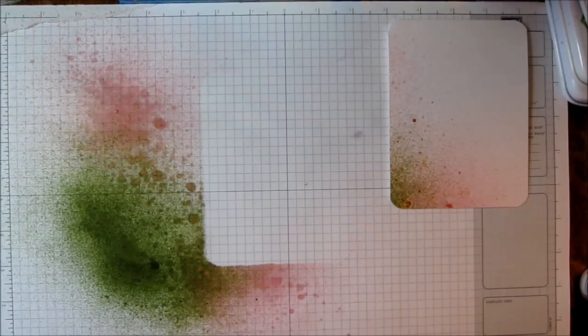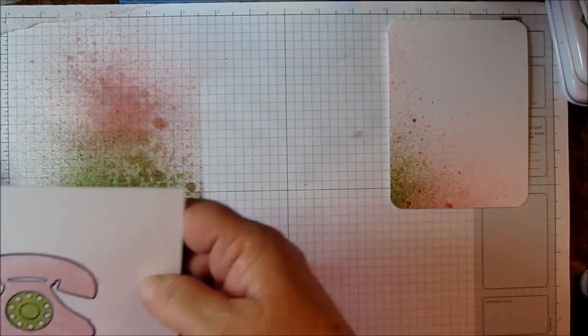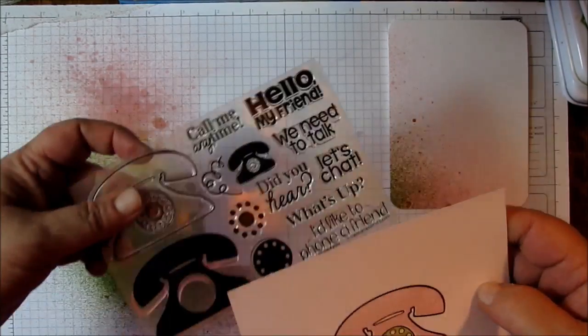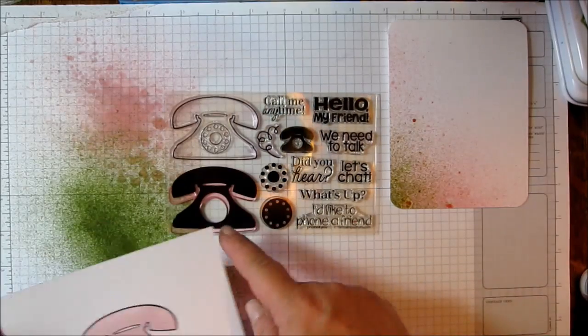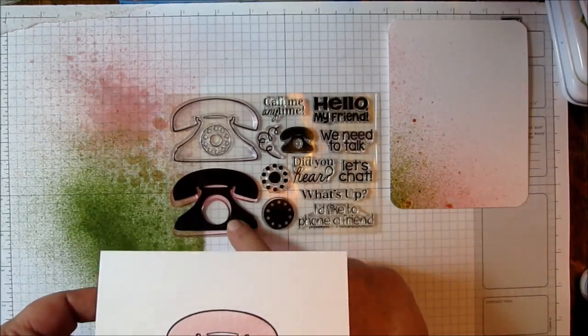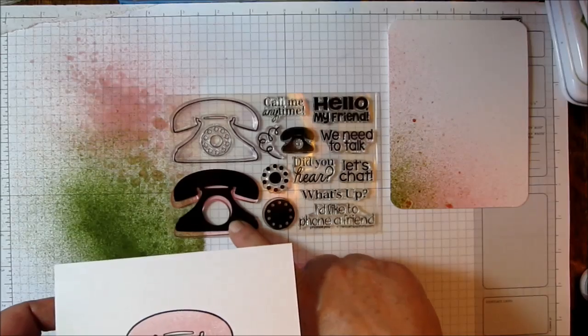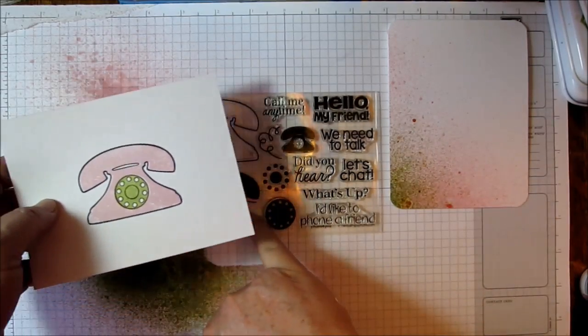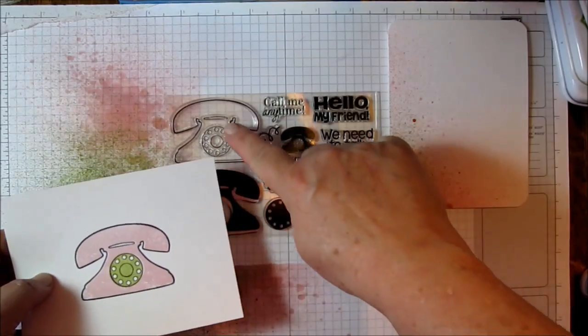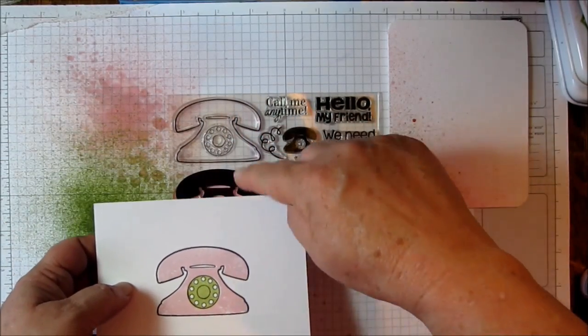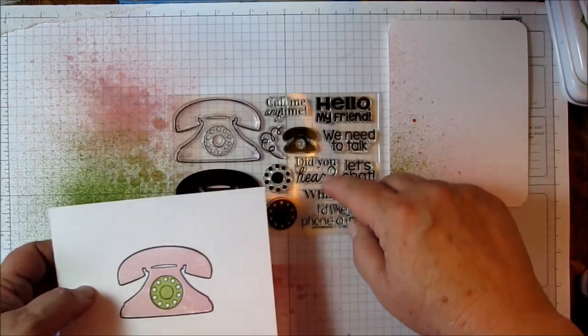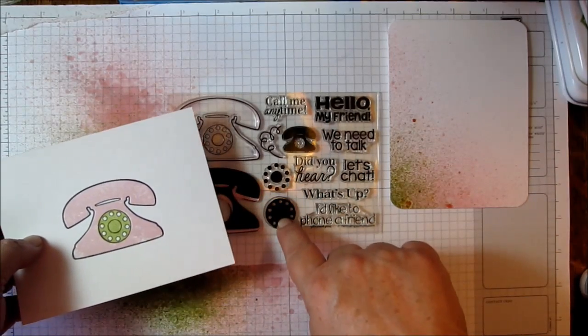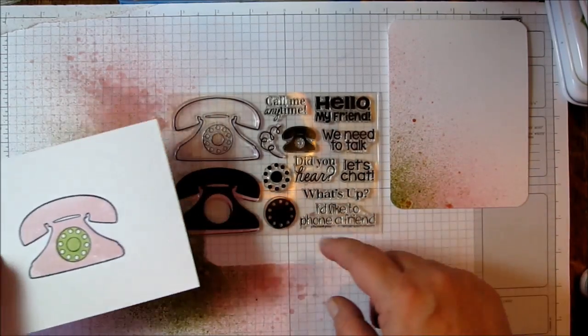Let me show you in the meantime how I finished my card. I stamped the solid image in bubblegum ink, that's premium dye inks by Stephanie Bernard. I stamped the solid in bubblegum, and then I went with the outline and stamped that in licorice, and then for the center section I used the artichoke ink.